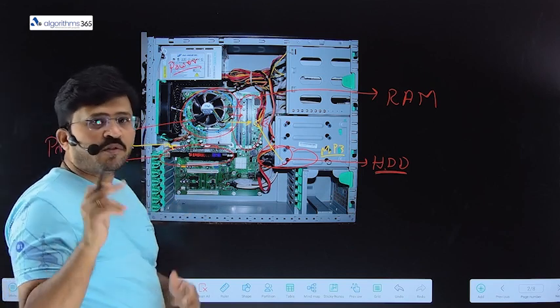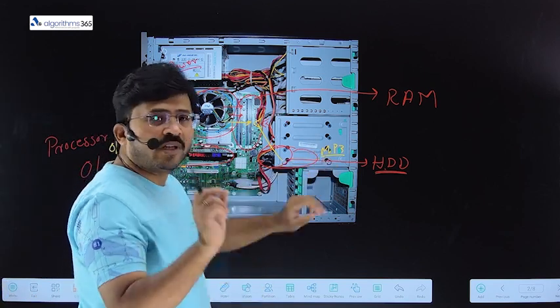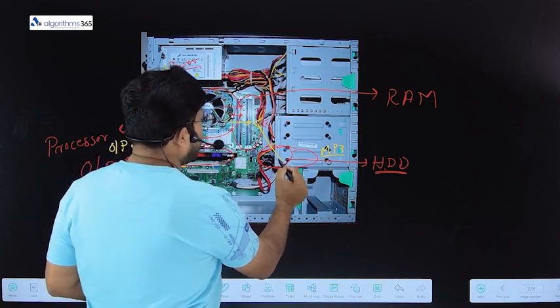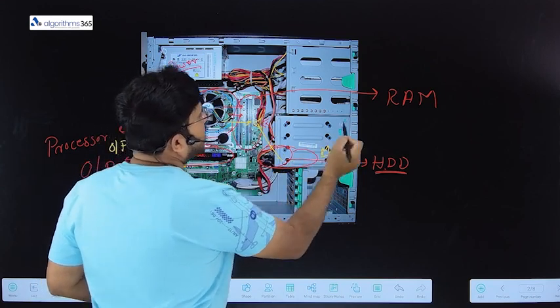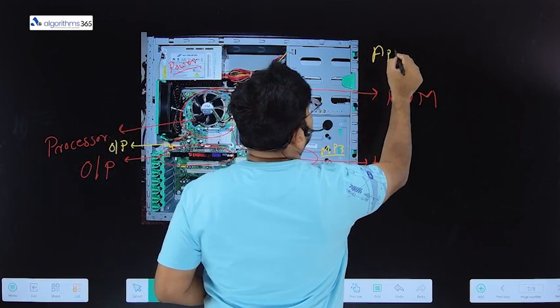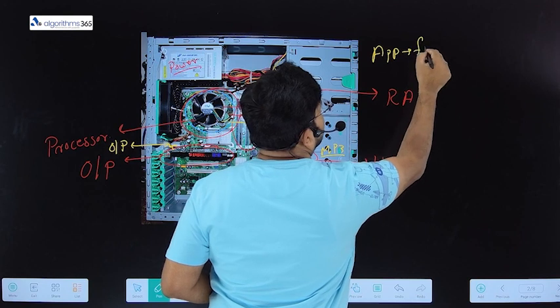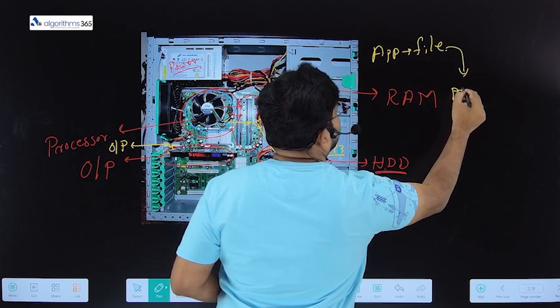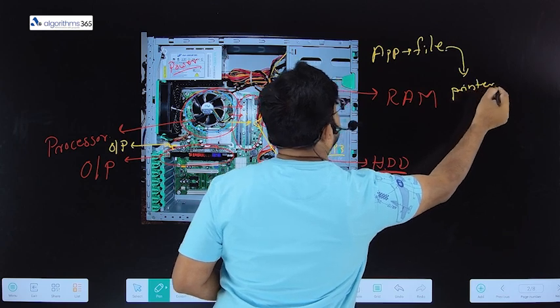Take an example of printing a file, same thing. You open the document in a Word or Excel and you say print. What happens is, from this hard disk, in the RAM, that application will load and that application will open the file. And then finally, that file is sent to the printer to the port that is available.